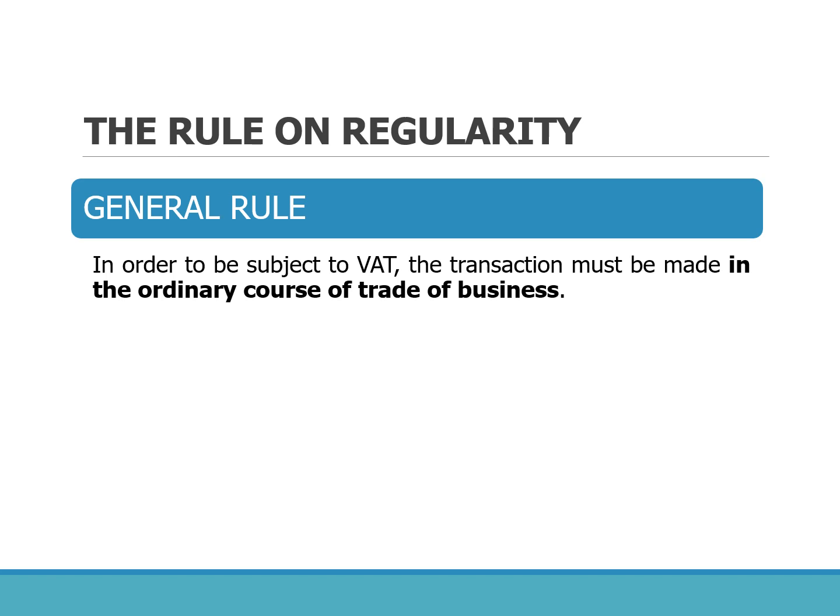The rule on regularity requires that sale, barter, or exchange be done in the ordinary course of trade or business for VAT to apply. This was applied in the case of Magsaysay Lines, where a government-owned corporation transferred vessels to Magsaysay Lines. The BIR assessed VAT on the transfer, but the Supreme Court said that since the transfer was pursuant to a declared privatization policy of the government and cannot be regarded as made in the ordinary course of trade or business, no VAT applies.